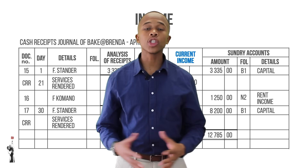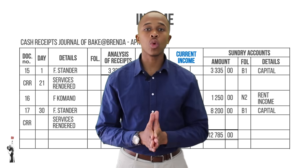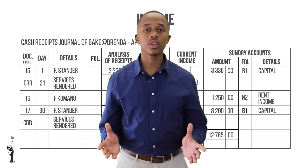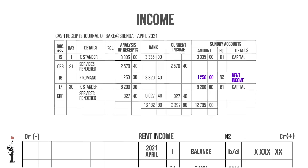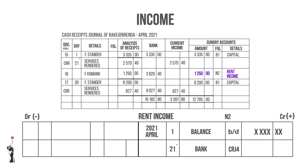Can you remember and identify which letter in DALIC represents which account? Let's look at the last recording for this lesson, which is rent income. In this example it's a sundry account, so the specific date needs to be recorded on the general ledger.